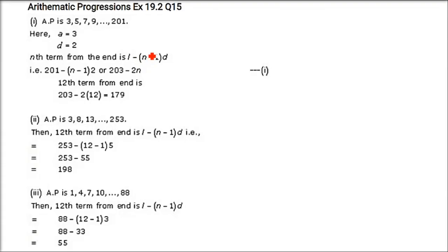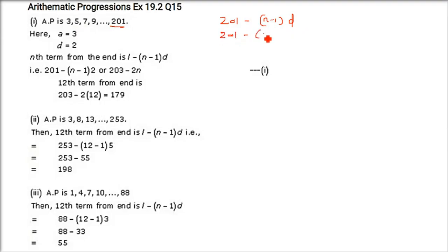Find the 12th term from the end of the following arithmetic progressions. The formula for the nth term from the end is: L minus (n−1)·d, where L is the last term. For the first sub-part, the 12th from end uses n−1 = 11, and d equals 5 minus 3 = 2. So the answer is 203 minus 22, which is 179. You can add 22 to confirm it: 203 minus 22 equals 179.